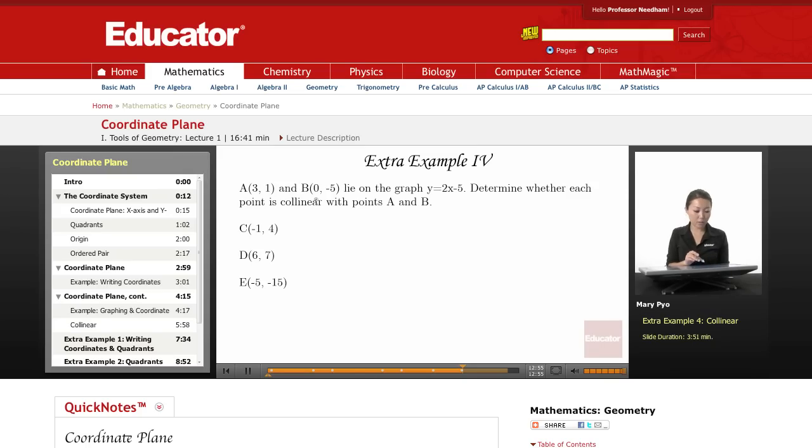Point A is 3, 1, and B is 0, negative 5. They both lie on the graph y equals 2x minus 5. Determine whether each point is collinear with points A and B.